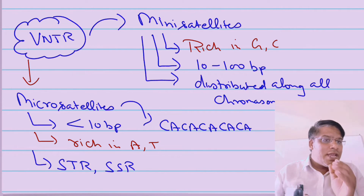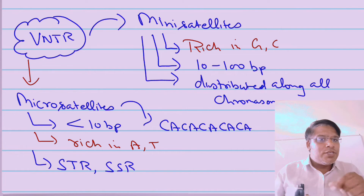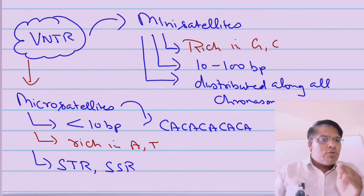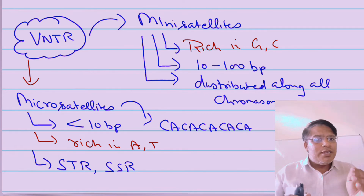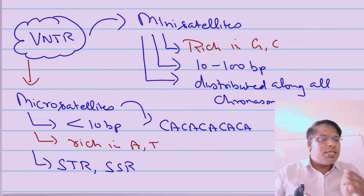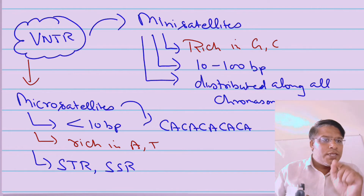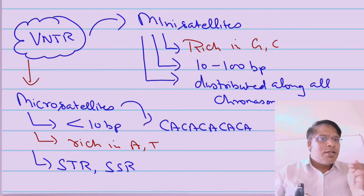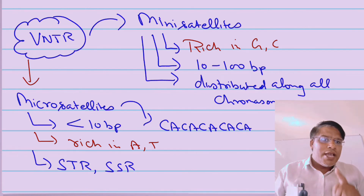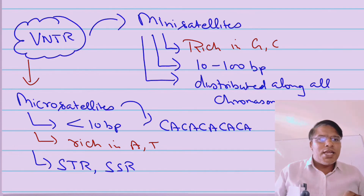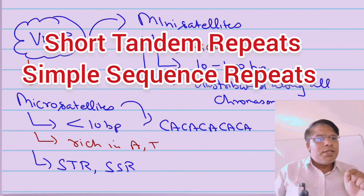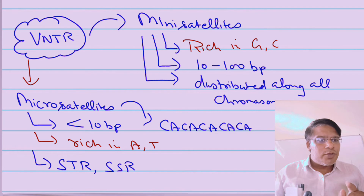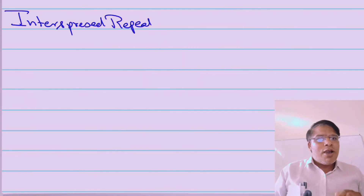In the case of microsatellites, the DNA sequence is less than 10 base pairs and is rich in A and T. So minisatellites are rich in G and C, while microsatellites are very small — less than 10 base pairs — and rich in A and T. For example, the sequence CACACA is a dinucleotide repeat where the two-base sequence CA is repeated multiple times. Microsatellites are also known as STR (short tandem repeats) or SSR (simple sequence repeats).